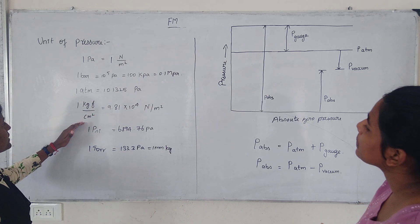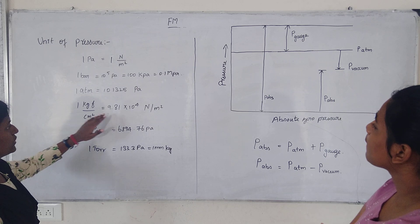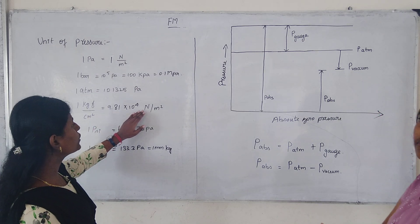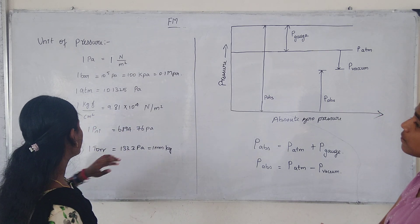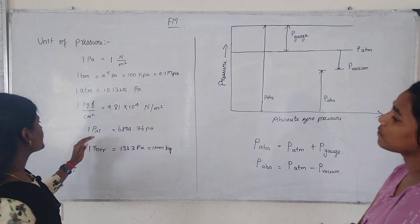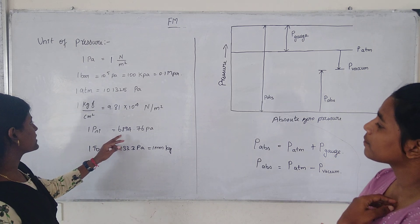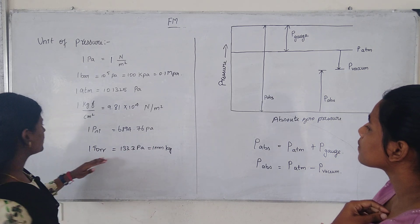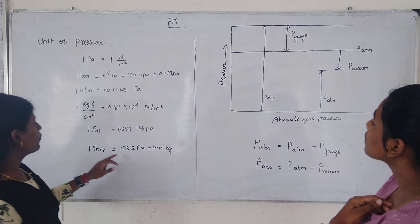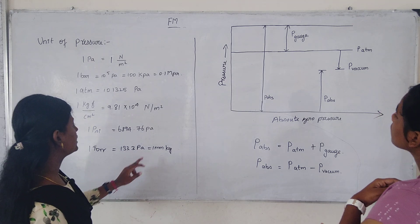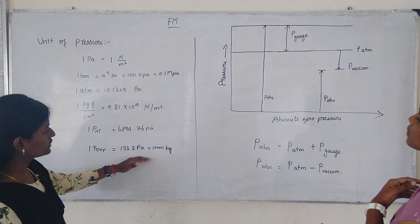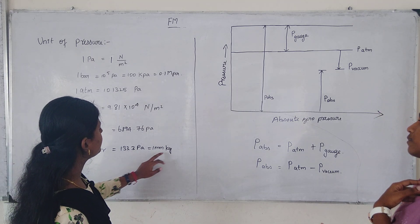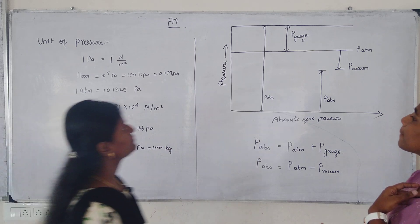1 kgf per centimetre square equals 9.81 into 10 to the power of 4 Newton per meter square. 1 psi equals 6894.76 Pascal. 1 torr equals 133.3 Pascal, equal to 1 millimetre of mercury.